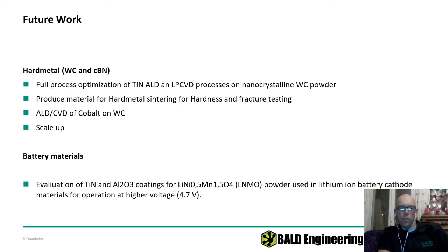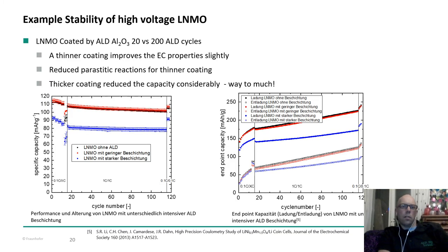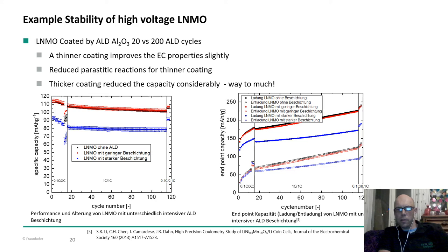It's a future material — not really on the market yet, and everybody's still using cobalt. Instead, we're using a nickel manganese lithium mixture. Our first test compared 20 cycles versus 200 cycles of aluminum oxide ALD — we knew 200 cycles would basically kill the cells, but we were surprised we could still measure something.